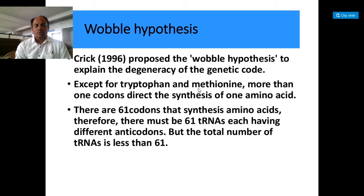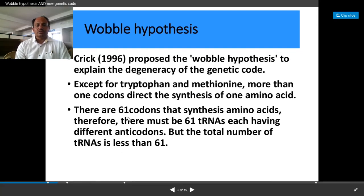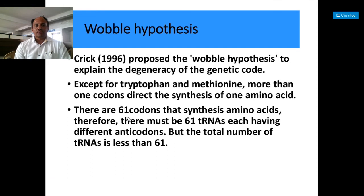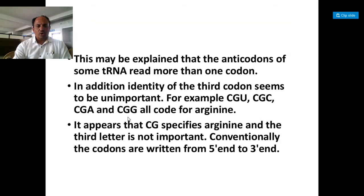Now, because there are 64 codons, and out of those 64 codons, 3 codons are termination codons, which are also called as stop codons, or these are also known as nonsense codons, because they do not specify any amino acids. So out of 64, now there are 61 codons which specify a particular amino acid or which synthesize amino acids. And therefore, there must be 61 transfer RNAs, each having different anticodons. But the total number of tRNA, or transfer RNA, is less than 61.